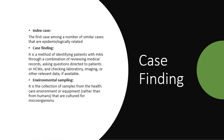Case identifying is the method of identifying patients with hospital-acquired infection through a combination of reviewing medical records, asking questions directly to the patient or healthcare worker, and checking laboratory imaging or other relevant data if available. Environmental sampling is the collection of samples from the healthcare environment or equipment, rather than from humans, that are cultured for microorganisms in large or uncontrolled outbreaks.